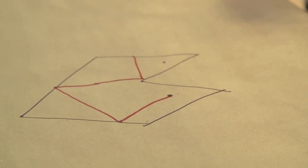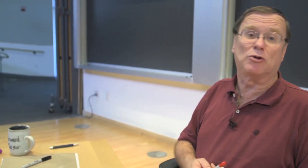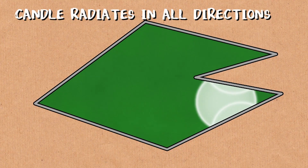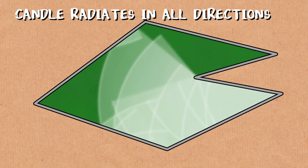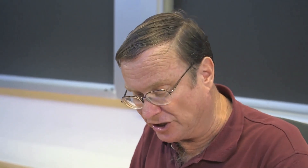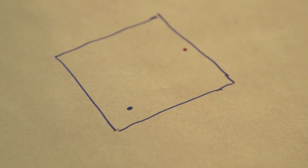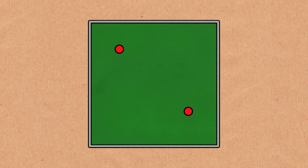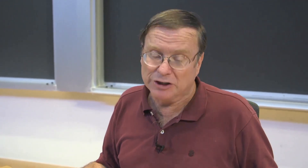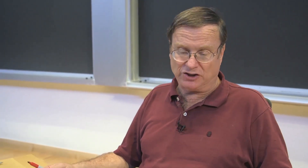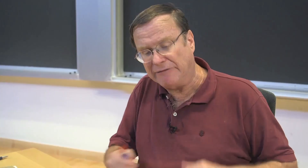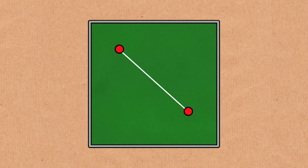Does the candle illuminate the entire room, or are there places that remain dark? The candle radiates light in all directions — can you reach every point? For example, if the room is a square, the candle can illuminate any other point just by going in a straight line, without bouncing off walls at all. This kind of room is called convex, meaning you can join any two points by a line without leaving the room. For convex rooms, illumination is obvious.